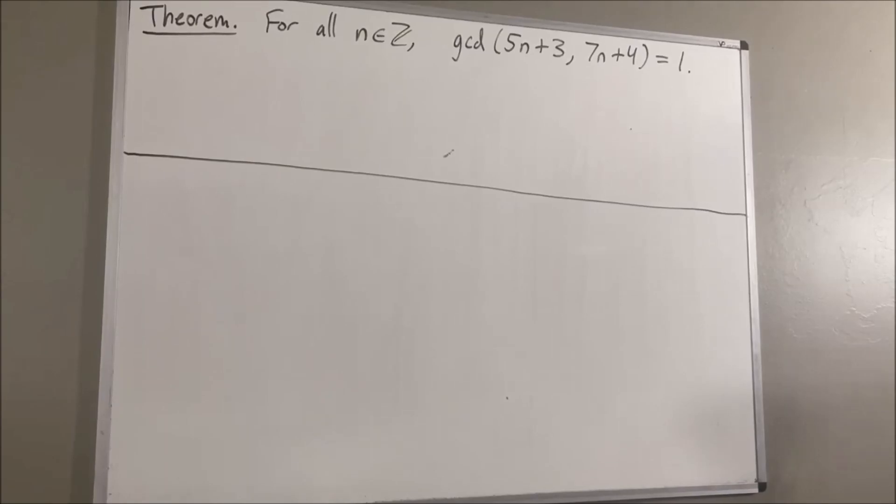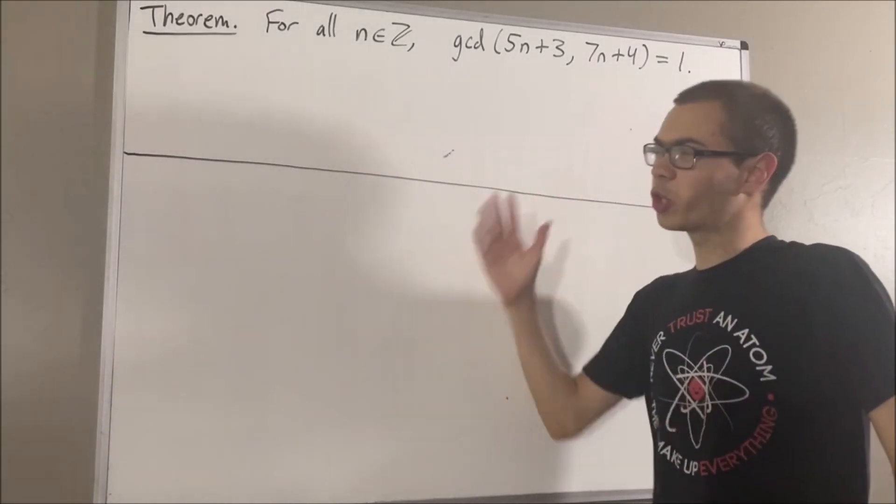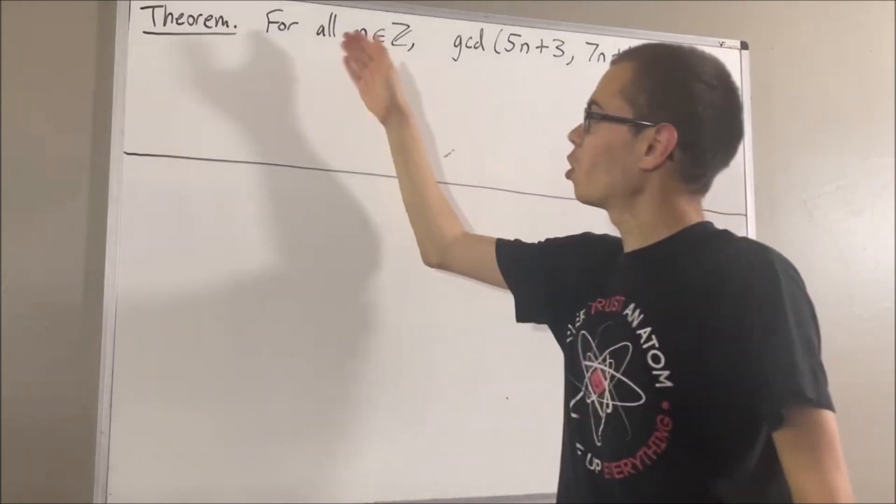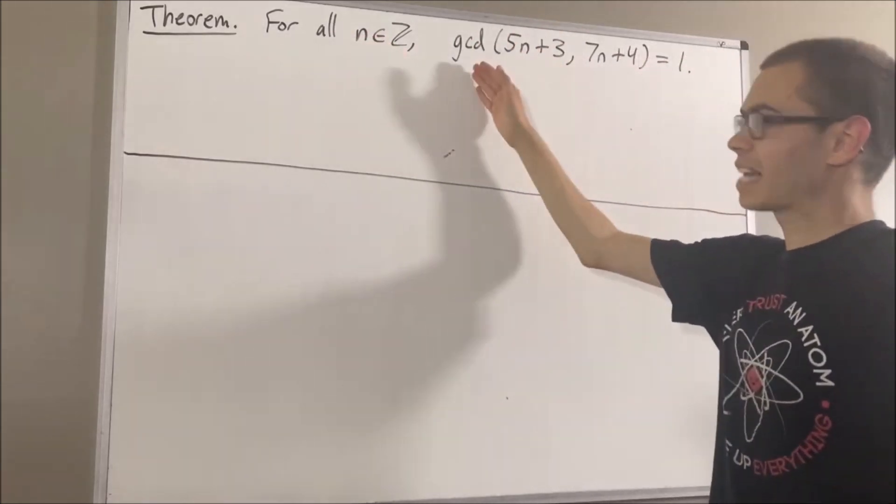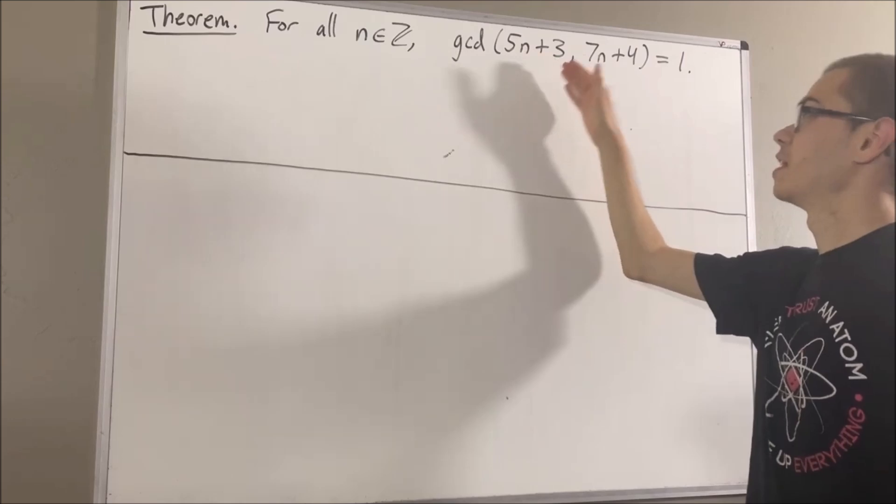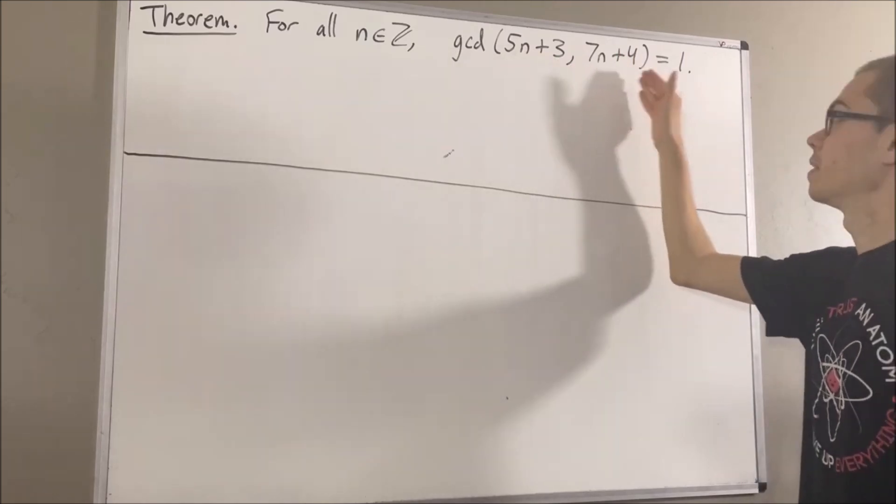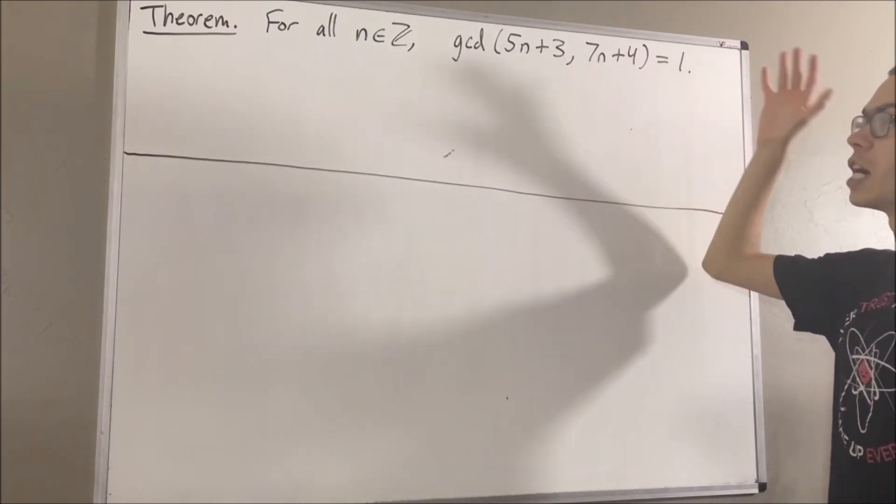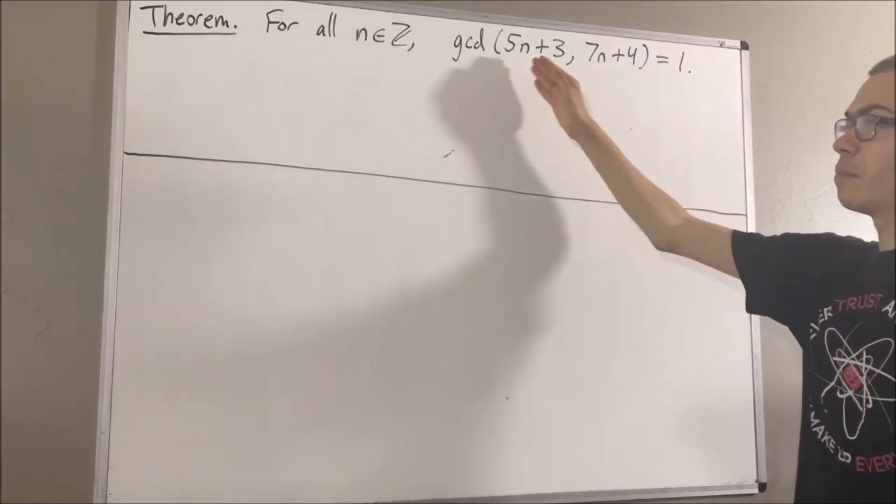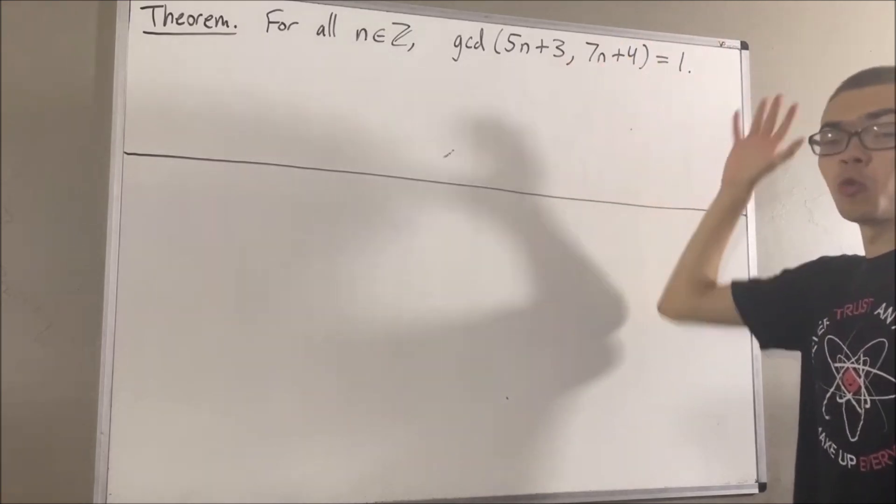Hello! In this video, we are going to prove the following theorem. For all integers n, the greatest common divisor of 5n plus 3 and 7n plus 4 is equal to 1. In other words, 5n plus 3 and 7n plus 4 are relatively prime.